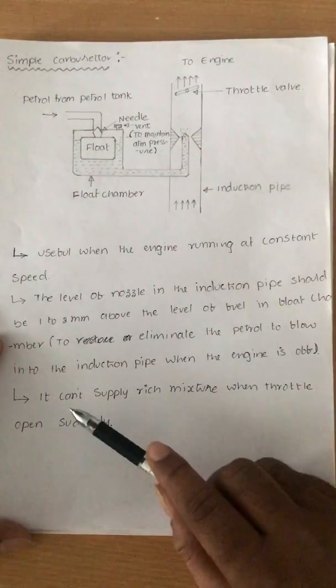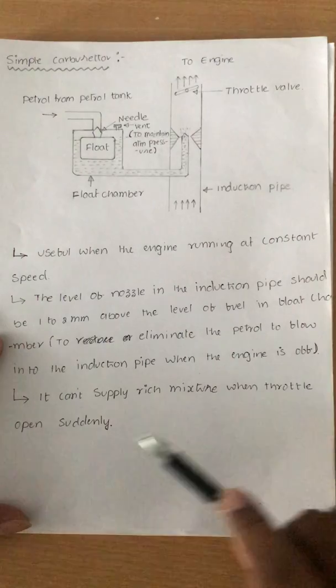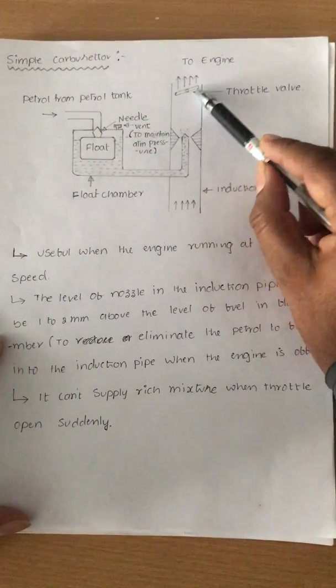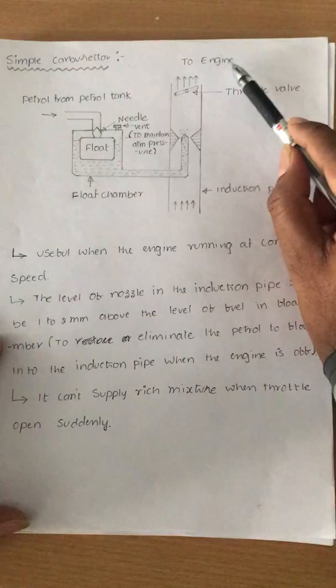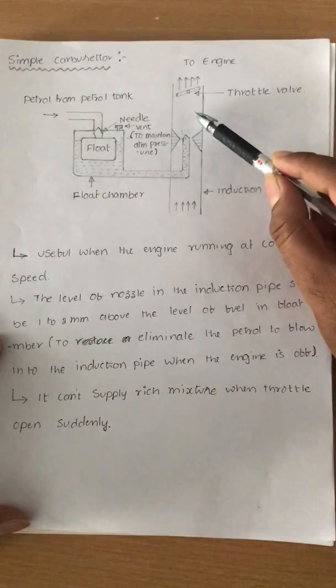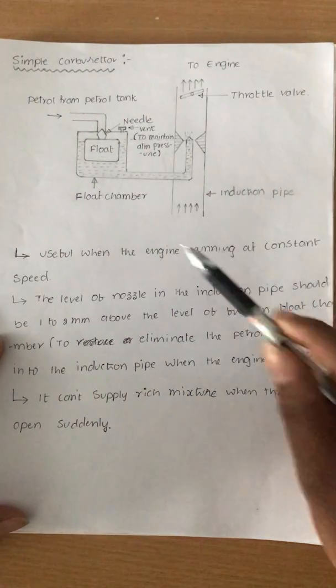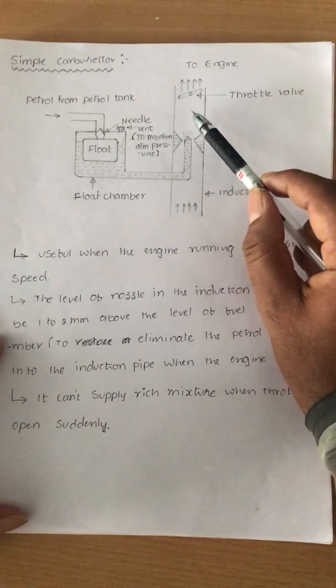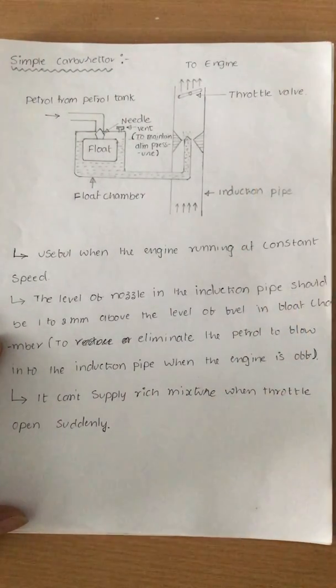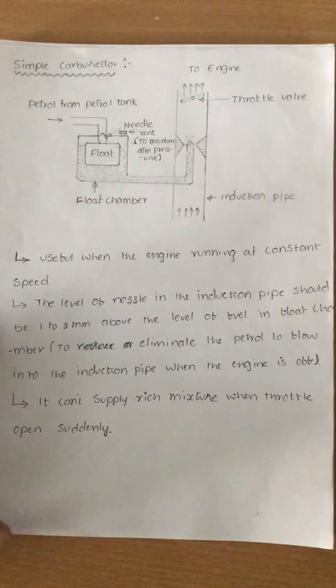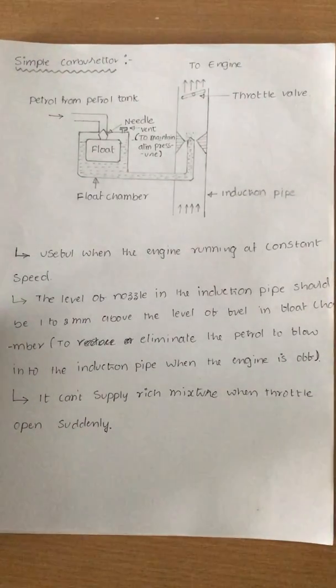The third point is it cannot supply rich mixture when the throttle opens suddenly. The throttle is connected to the accelerator. If I accelerate suddenly, it cannot give rich mixture immediately because it provides only constant speed. It gives a constant air-fuel mixture all the time. This is the greatest disadvantage in simple carburetors, which can be overcome in the next stage. We will see the Solex carburetor in the next class. Thank you very much.